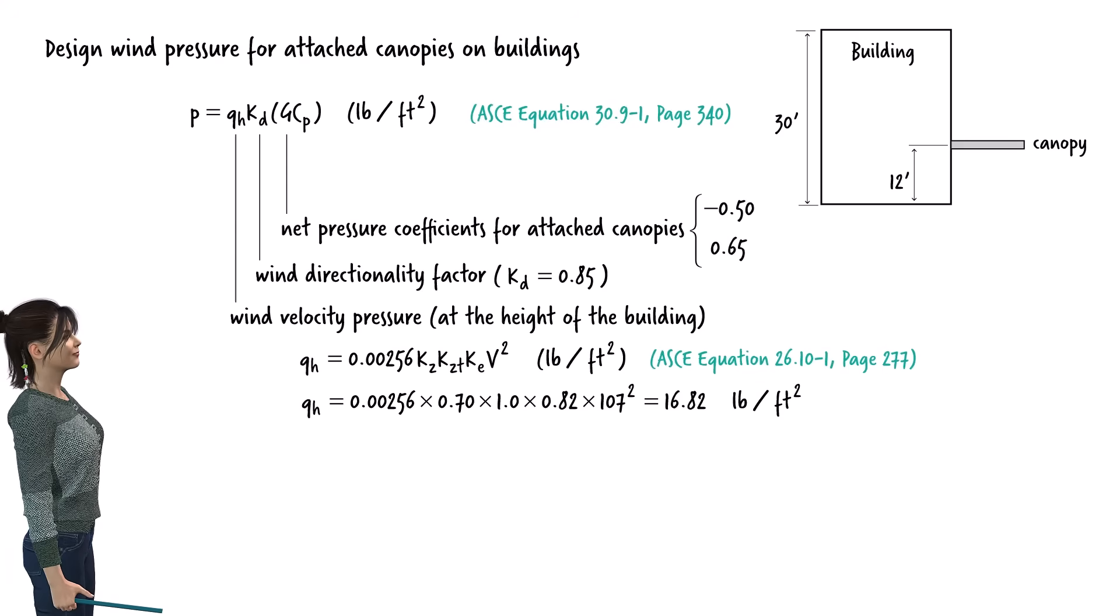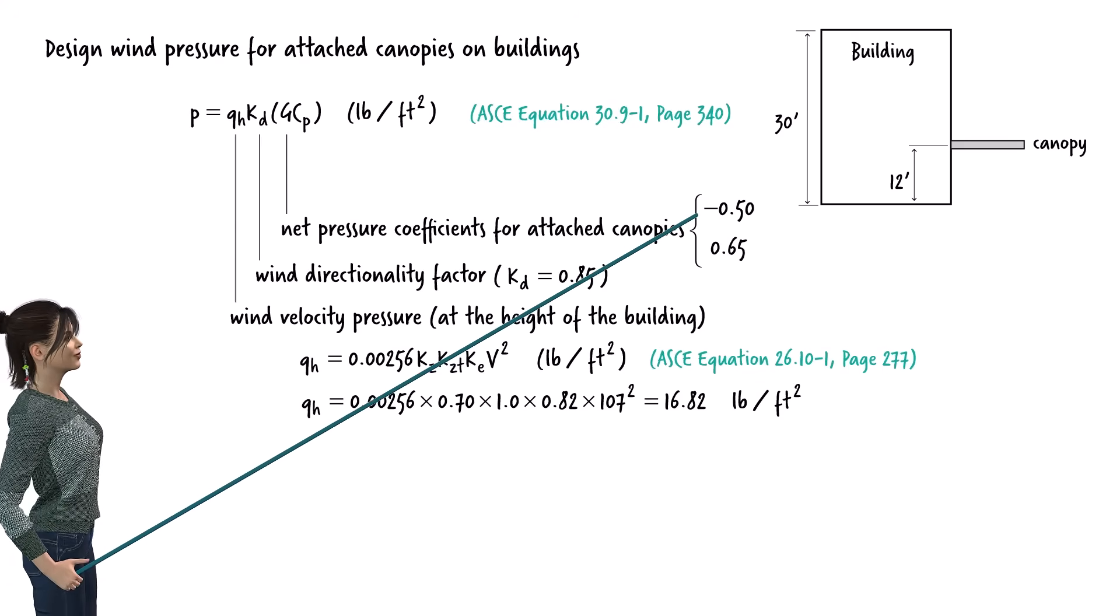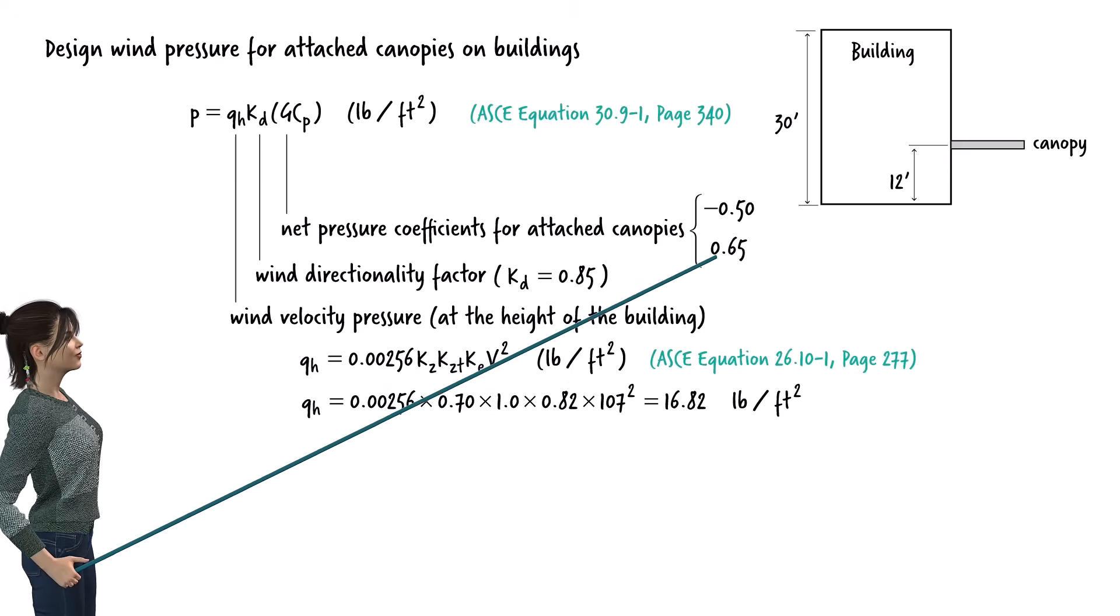To determine the design wind pressure, we use two net pressure coefficients, one for the negative net pressure and one for the positive net pressure.